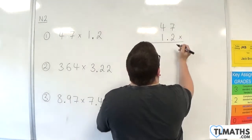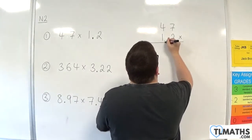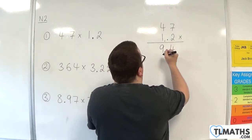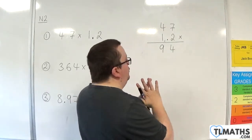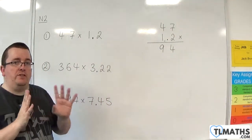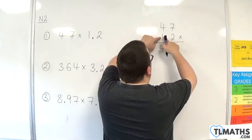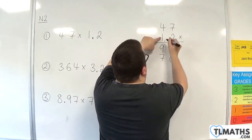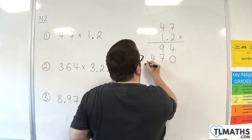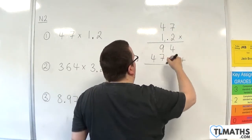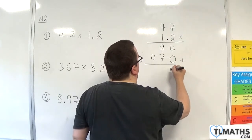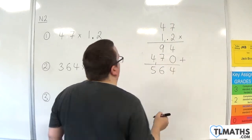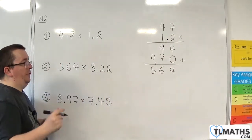So 2 times 7 is 14. Put down the 4, carry the 1. 2 times 4 is 8, plus the 1 is 9. Now ignore the decimal point, so think of it as 12. We're multiplying by 10, so we're going to have to add in a 0. 1 times 7, and then 1 times 4. The two numbers we have we add together. 4 plus 0 is 4. 9 plus 7 is 16. Put down the 6, carry the 1. That gives us 5. So we get 564.